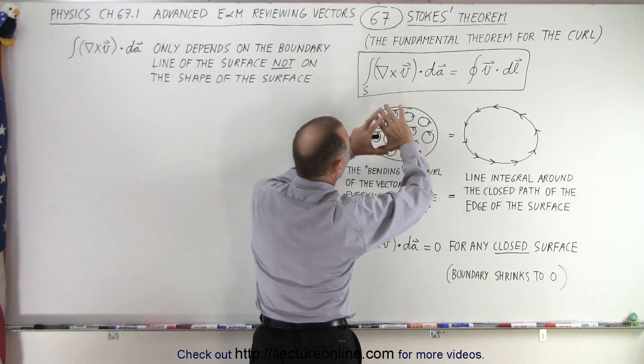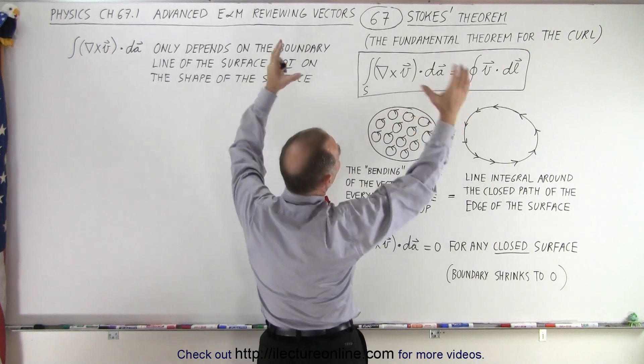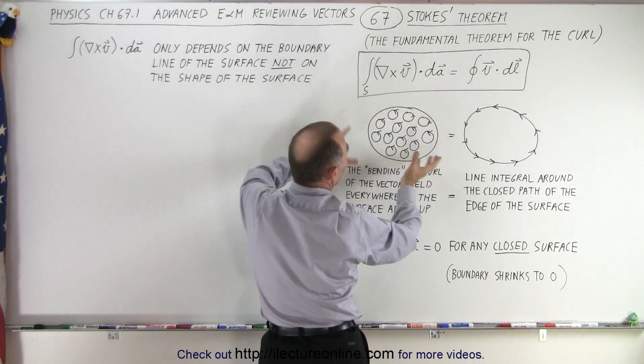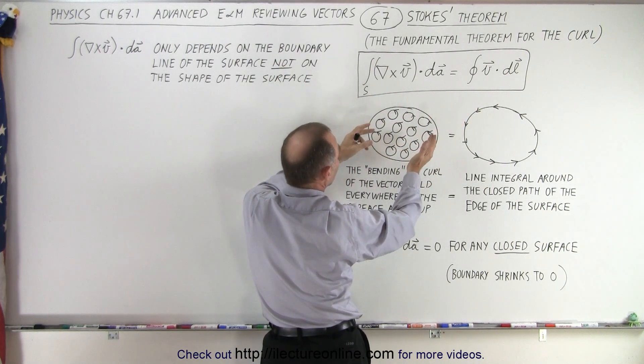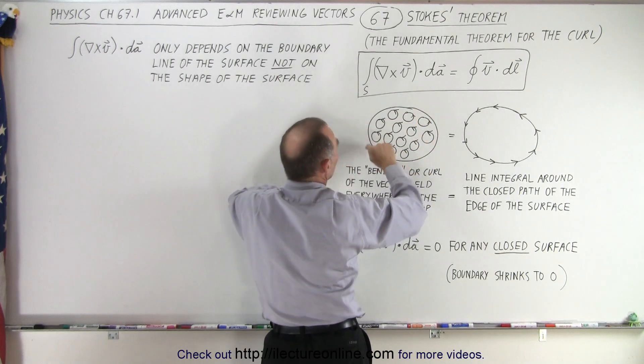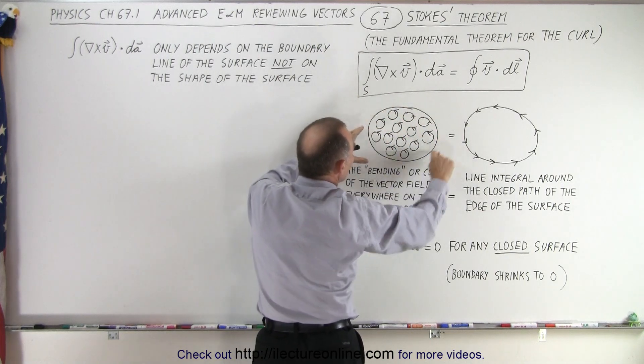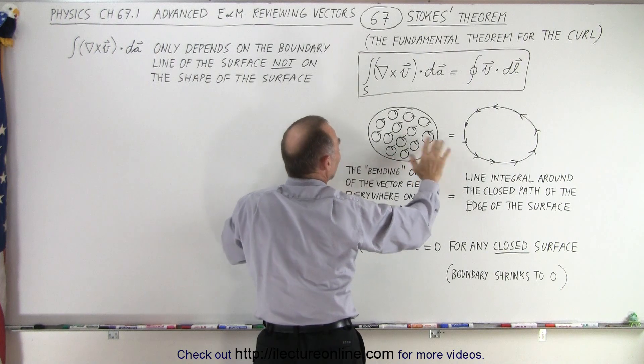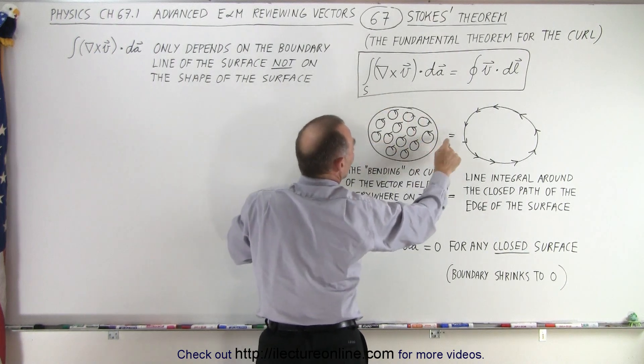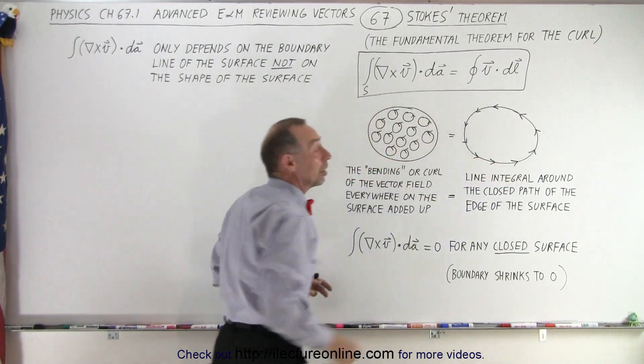The surface can be flat. The surface can bulge up like a mushroom, no matter what it looks like. You can make the surface look like anything you want it to look. As long as the boundary is the same,